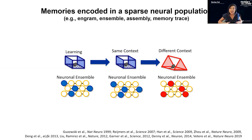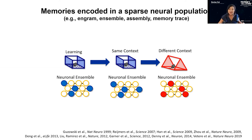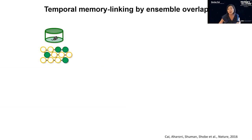There's a wealth of literature suggesting that this memory engram or neural ensemble is a stable representation of the memory, and that the similarity of physical dimensions of experiences determines ensemble overlap. While I was a postdoc at Alcino Silva's lab, I became curious: in addition to similarity of physical dimensions, what about similarity of time? Can having two memories encoded closer in time bias them into an overlapping representation as a way to temporally link memories?